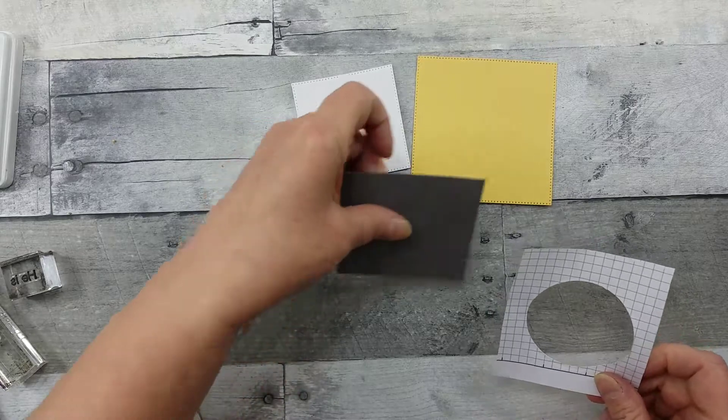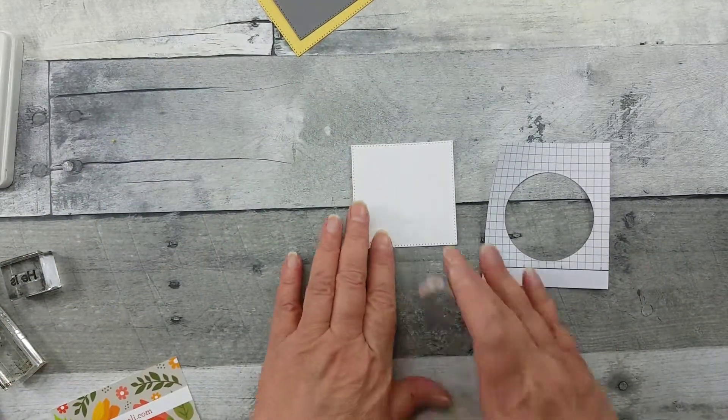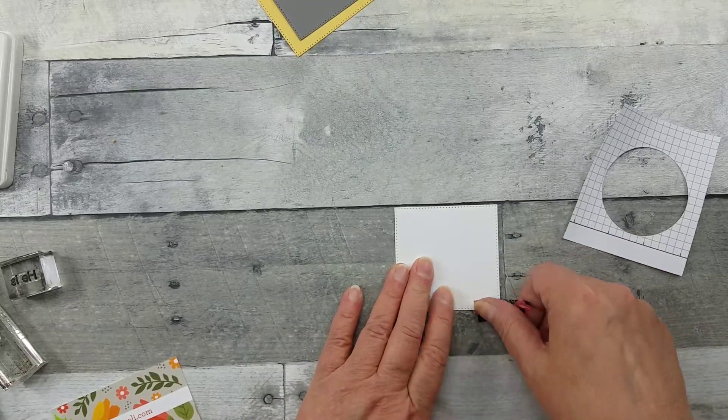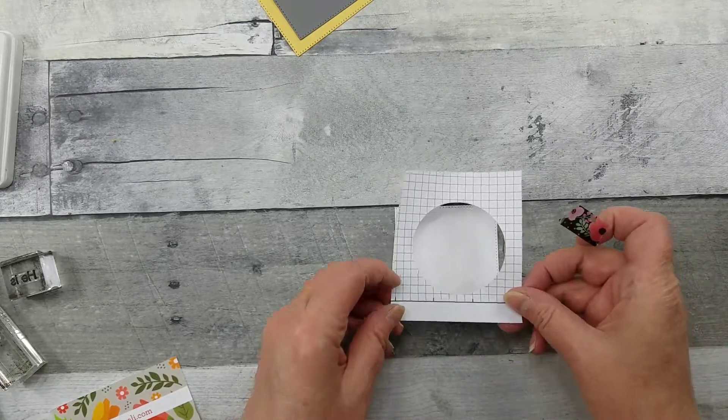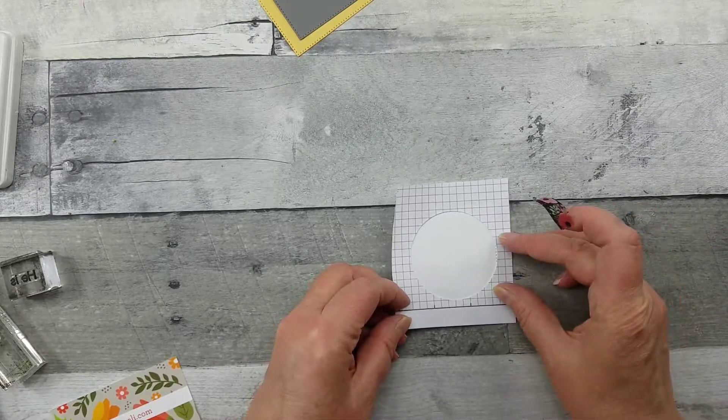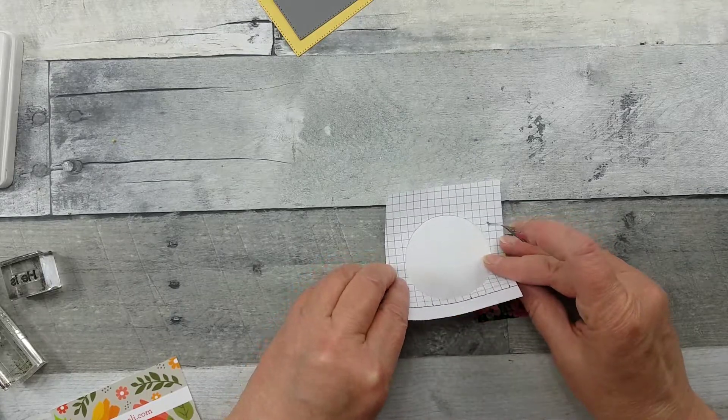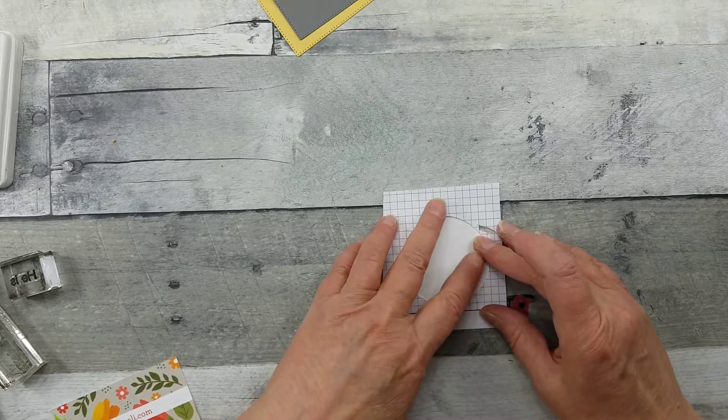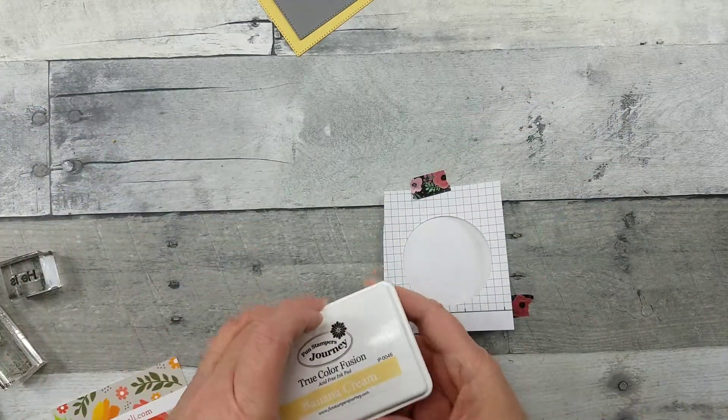And here we're going to have a little template. So I'm going to start out with these two pieces here. I'm going to secure this with some washi tape because I don't want it to move on me, and then I'm going to try to center my template here and secure it with some washi tape.